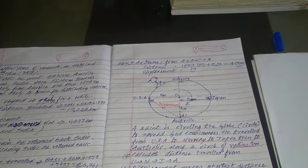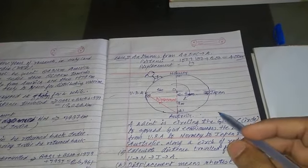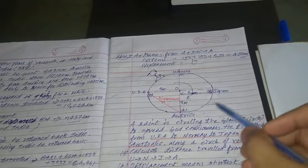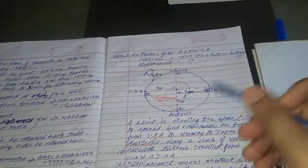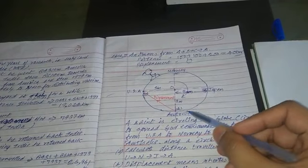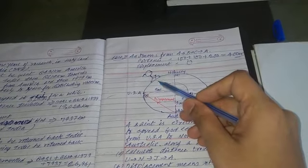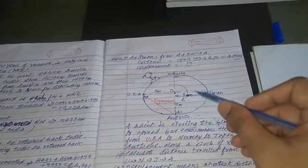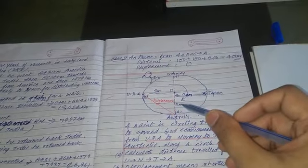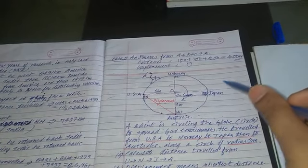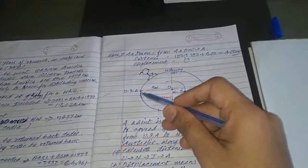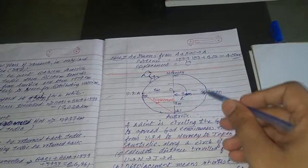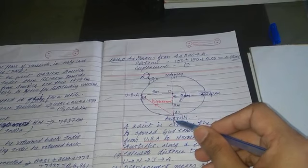Good morning students. Let us conclude our discussion on distance and displacement with the help of this last example. I have tried to draw a globe in front of you — consider it might be an earth or just a circle. The saint is circling the globe, travelling from one country to another to spread God consciousness among the people of the entire world. He started from USA, moved to Norway, then to Japan, and then to Australia.